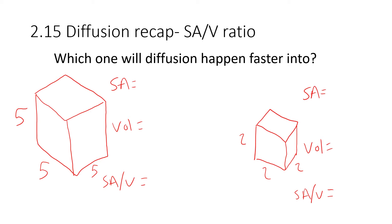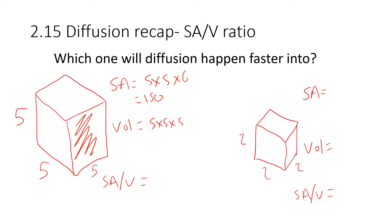For the 5 by 5 by 5 cube, the area of one face is 5 by 5, multiplied by 6 faces: 25 times 6 is 150 cm squared. The volume is 5 times 5 times 5 which equals 125 cm cubed. So the surface area to volume ratio is 150 divided by 125 which is 1.2.